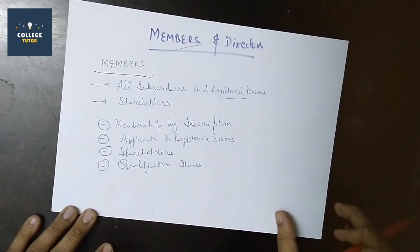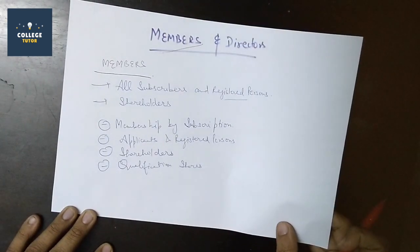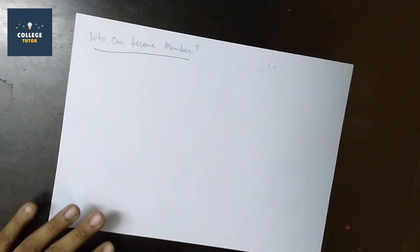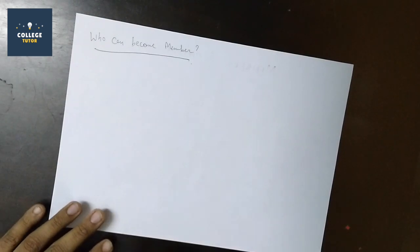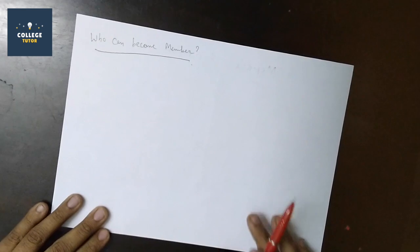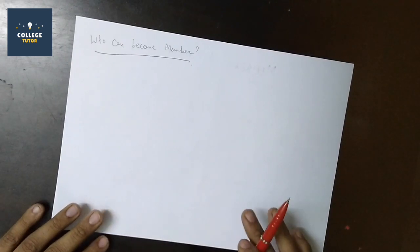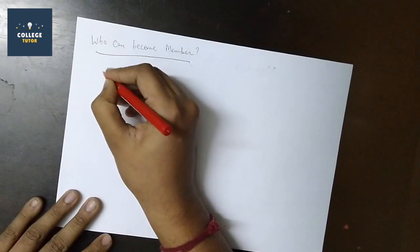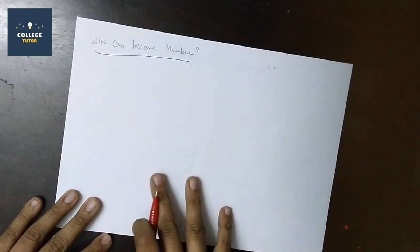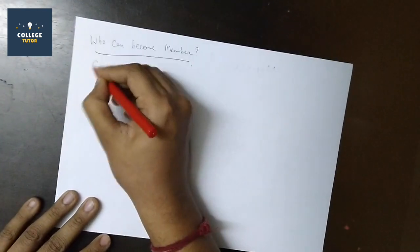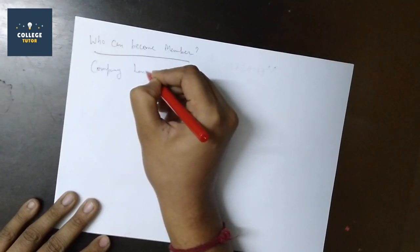We have three to four terms to check if they can become members or not. The company law has not prescribed this qualification. Company law has never told us in which cases one member will qualify for membership, but it can be said that someone who can enter a valid contract can become a member.